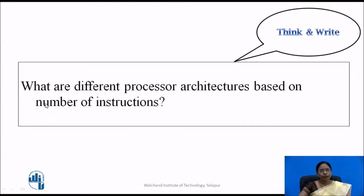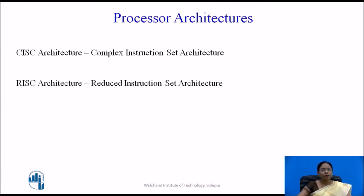The processor architectures based on the number of instructions are CISC — Complex Instruction Set Architecture — and RISC — Reduced Instruction Set Architecture. As the name suggests, RISC has a reduced, smaller number of instructions, while CISC has a huge number of complex instructions.